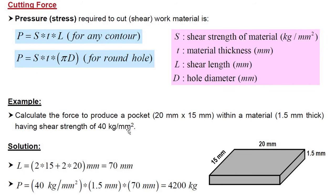First we need to calculate the total cutting length of the contour or cutting edges. It would be twice the width and twice the length which comes to 70 mm. The total cutting force P required would be shear strength 40 kg per mm square multiplied by thickness 1.5 mm multiplied by total cutting length 70 mm.